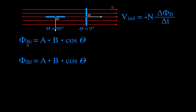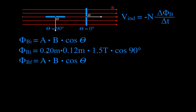The change is always the final minus the initial. For the initial flux: the area of the rectangular coil is 0.2 meters times 0.12 meters, times the magnetic field strength, times cosine of theta. Theta is the angle between the magnetic field and the line perpendicular to the face of the coil. Since the coil is parallel to the field initially, that angle is 90 degrees, and cosine of 90 is zero. So the initial magnetic flux is 0 Webers — no magnetic field is going through the coil.